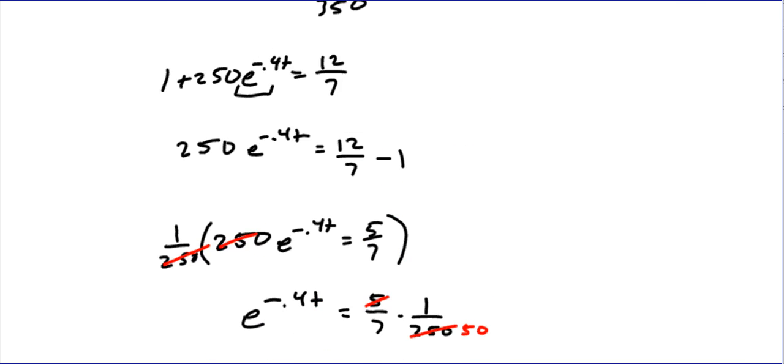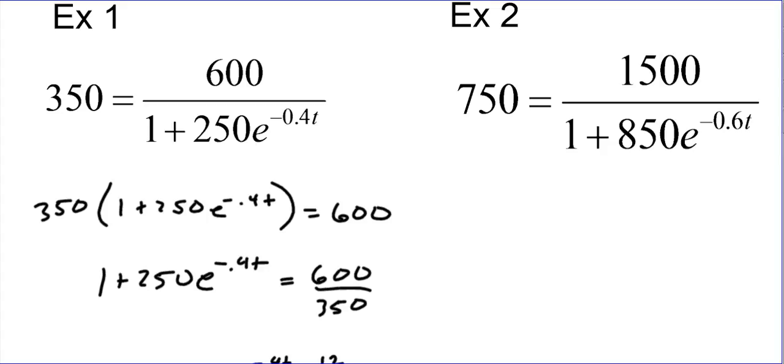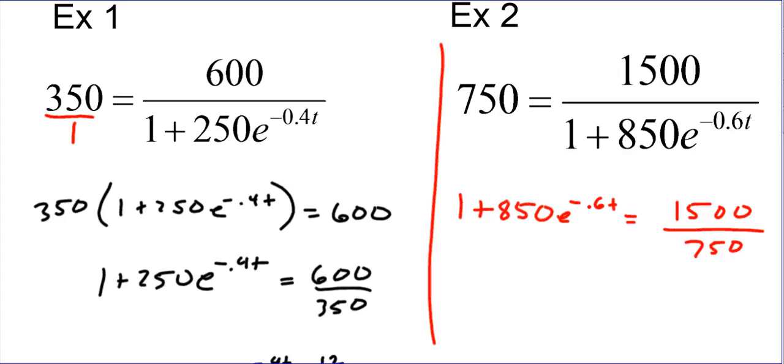Now if you didn't get that, let's try another one. It's a little bit more involved. From here we're going to do the same thing, maybe I'll do it a little faster. If you notice, over here when we multiply both sides, we're essentially just using cross-multiply, changing the means and the extremes. So a little faster way, we know it's going to equal 1 plus 850 e to the negative 0.6t equals 1500 over 750.